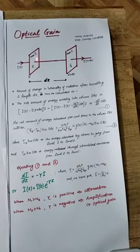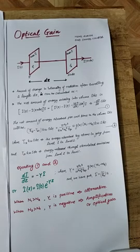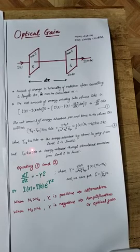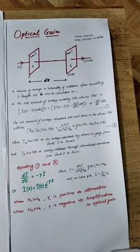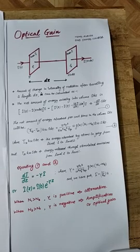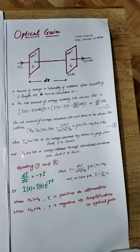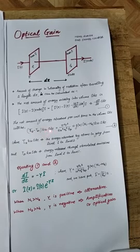Simultaneously, energy is also added through stimulated emission, written as T21·ℏω·S·dz, where T21 is the number of atoms making transitions from level 2 to level 1 through stimulated emission per unit time per unit volume, and ℏω is the energy emitted per transition. The net amount of energy absorbed per unit time in volume S·dz is the difference of these two: (T12 minus T21)·ℏω·S·dz.